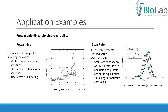Varying the scan rate of the DSC experiment can also give us information about protein unfolding. In this example, interleukin-1 receptor was scanned at 0.25, 0.5 and 1.5 degrees per minute. Scan rate dependence of the Tm indicates that folded and unfolding protein are not in equilibrium, and that the unfolding is kinetically controlled.